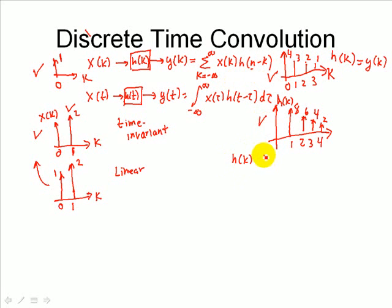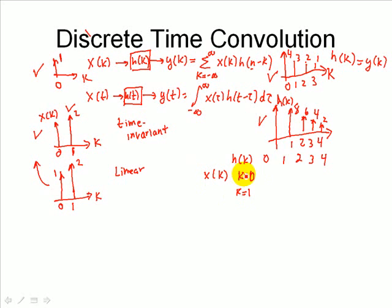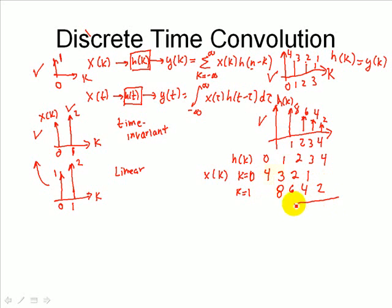At positions 0, 1, 2, 3, and 4, for the input x_k: for k=0, we have 4, 3, 2, and 1 starting at position 0. The other one is delayed by 1 but doubled, so it's 8, 6, 4, and 2. Because of linearity, we add these two together to get: 4, 11, 8, 5, and 2.